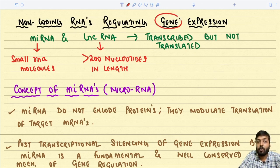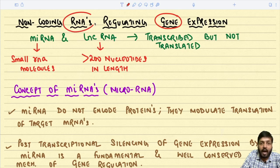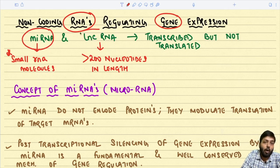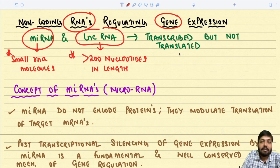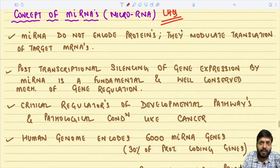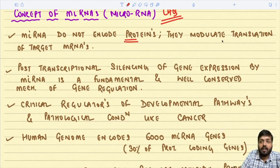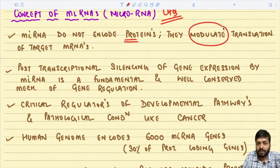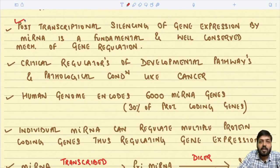Coming to the last leg of today's lecture, we are going to read about non-coding RNAs which regulate gene expression. Among the five classes of non-coding genes discussed earlier, we will now focus on micro RNAs — small RNA molecules — and long non-coding RNAs — more than 200 nucleotides in length. These are transcribed but not translated. Micro RNAs do not encode any protein; they just modulate the translation of target mRNAs, and they are responsible for post-transcriptional silencing of gene expression.